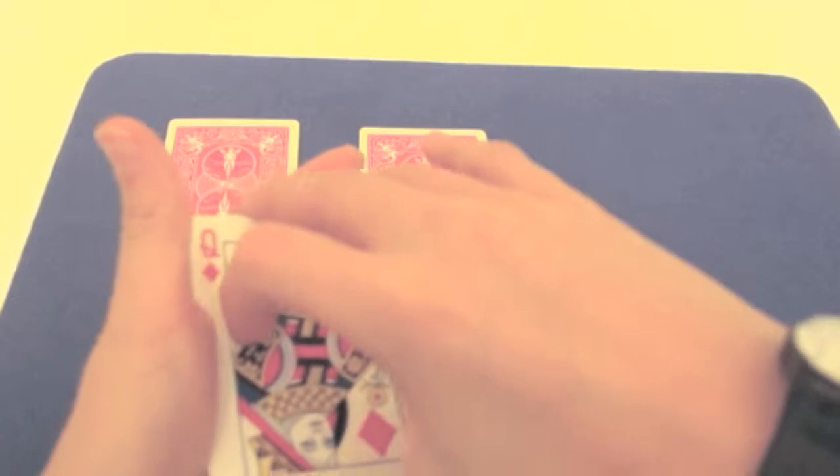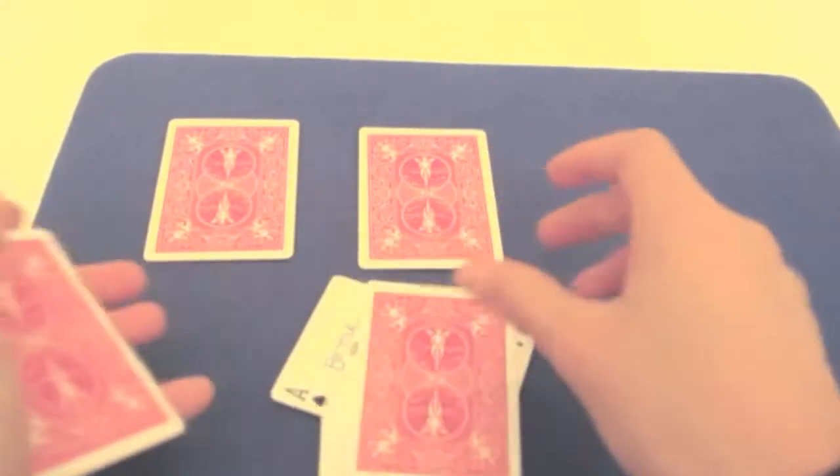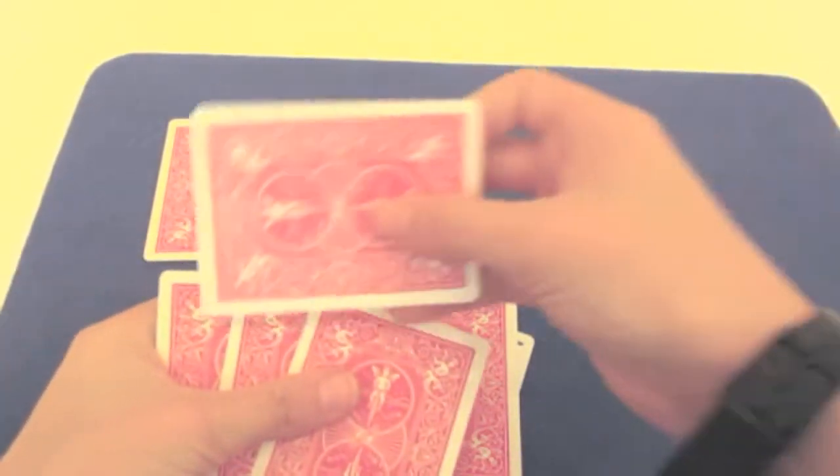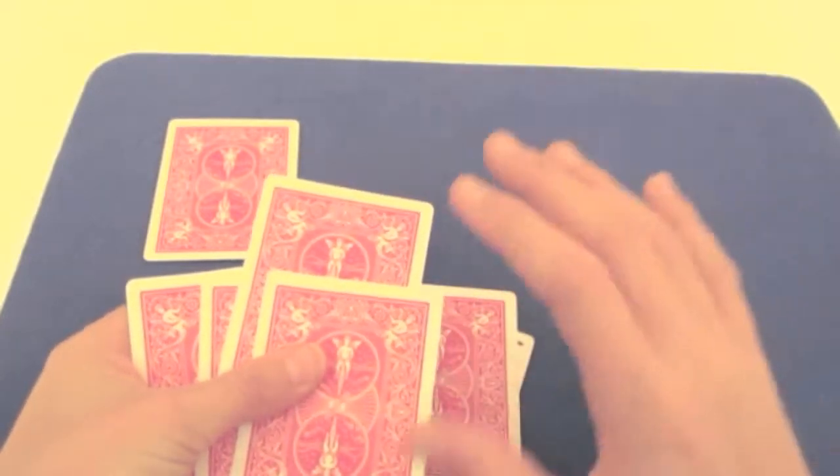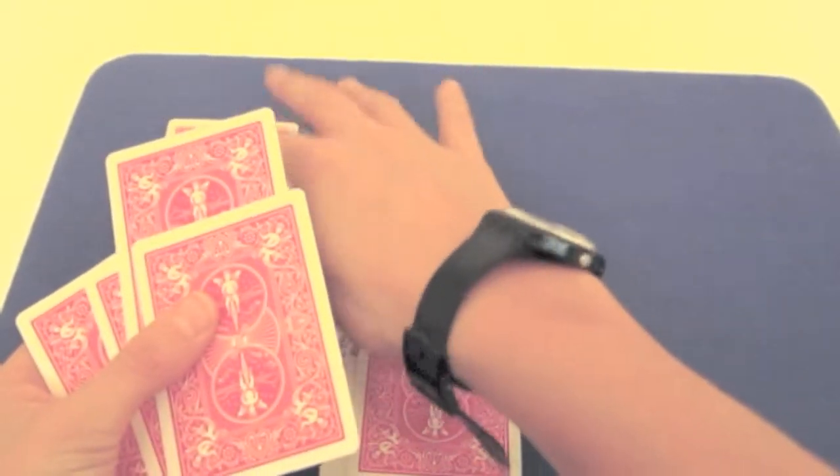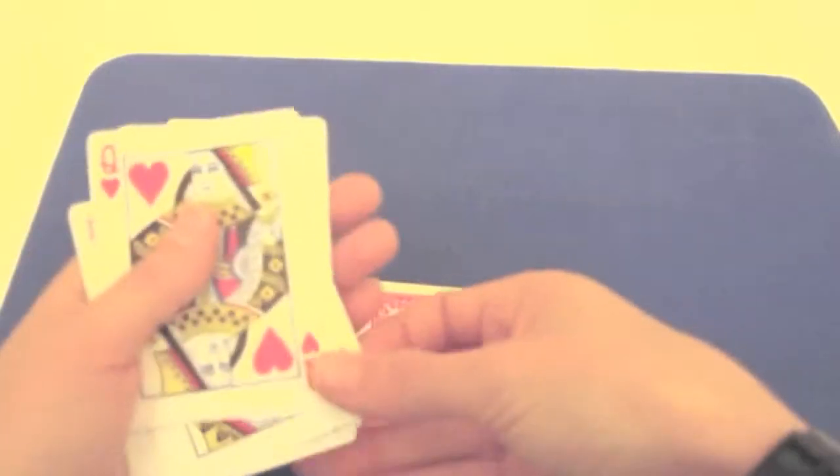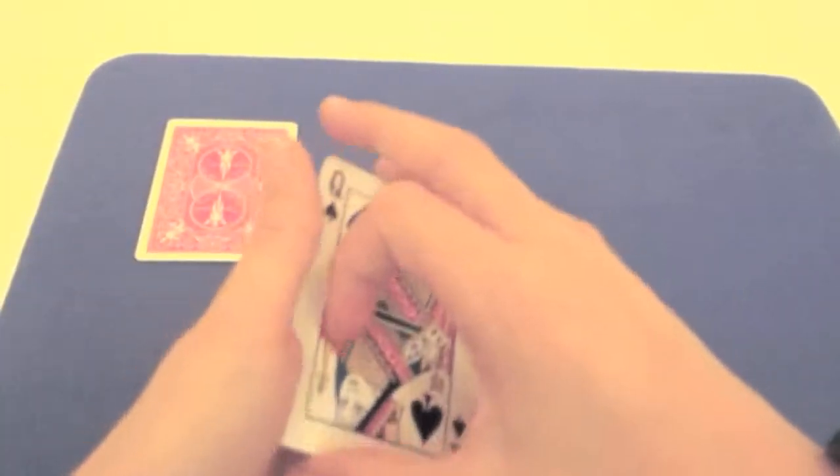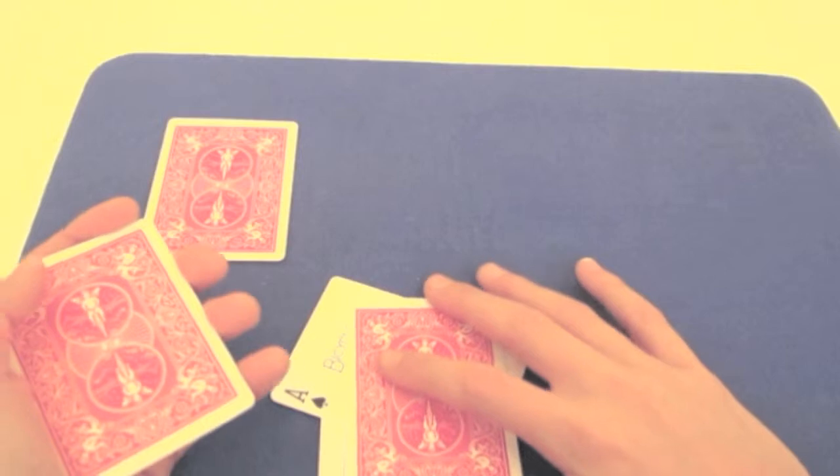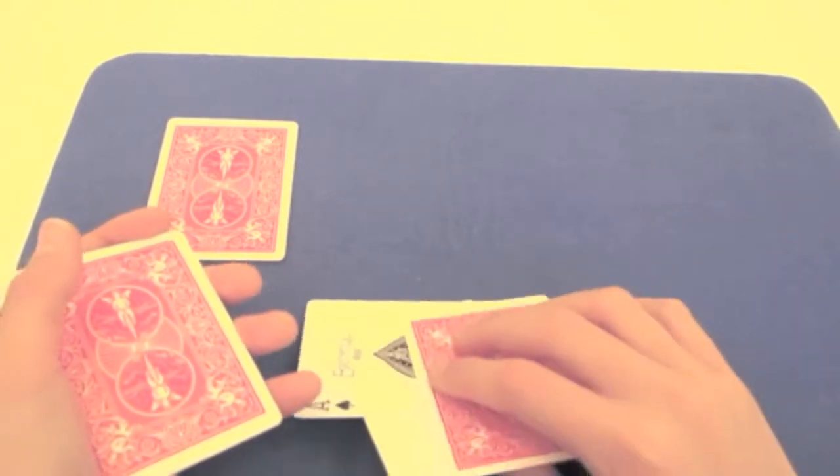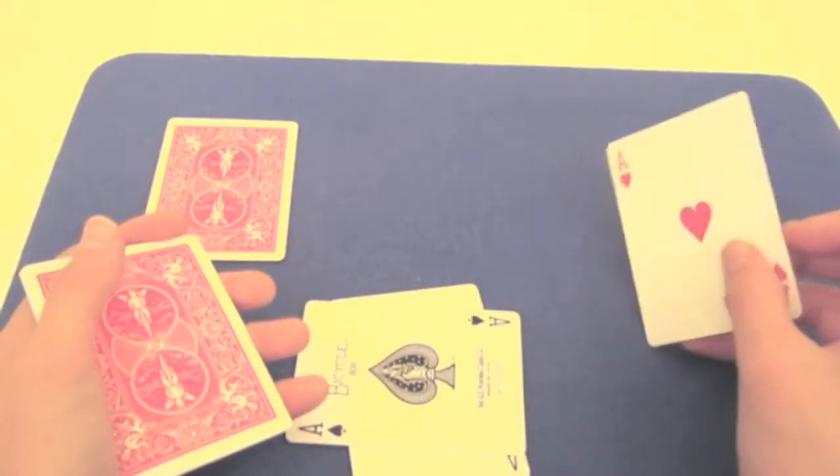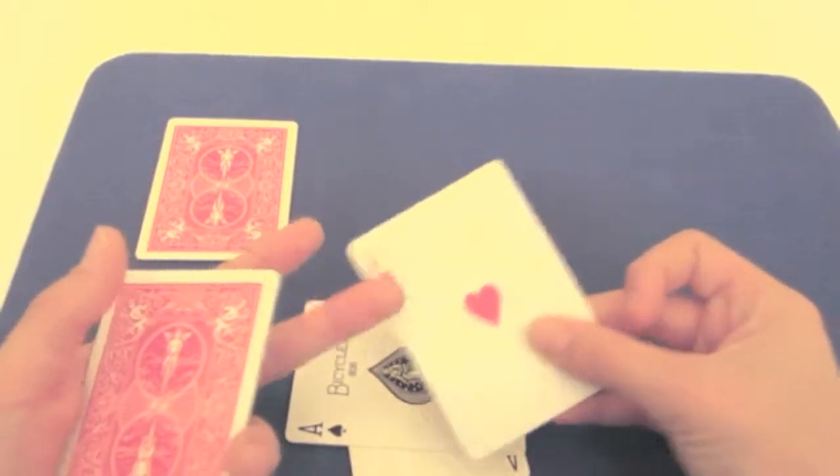Double lift. Put the queen here. You take the ace. Never show the aces because this one won't be an ace. Put it there. Perform your Elmsley count. That's it. Done. Snap your fingers. Sorry, I can't speak properly. And there you've got your ace.